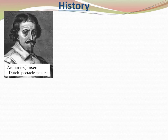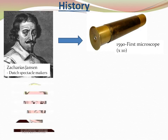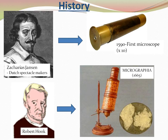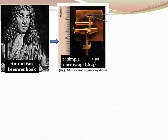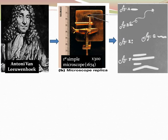History. The Dutch spectacle maker Jack Harris Jensen made the first microscope with a magnification power of 10 times in 1590. Then Robert Hooke made Micrographia in 1665. Then Anthony van Leeuwenhoek made a microscope with a magnification power of 300 times in 1674, and he demonstrated the shape of microorganisms and their movements.